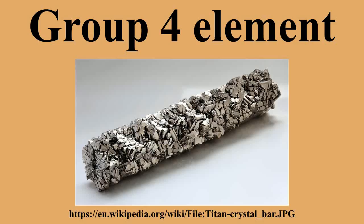Group 4 is a group of elements in the periodic table. It contains the elements titanium, zirconium, hafnium, and rutherfordium. This group lies in the D block of the periodic table. The group itself has not acquired a trivial name; it belongs to the broader grouping of the transition metals. The three group 4 elements that occur naturally are titanium, zirconium, and hafnium.